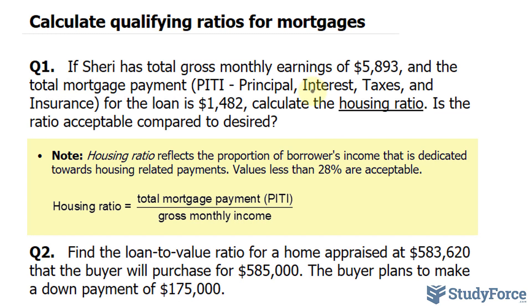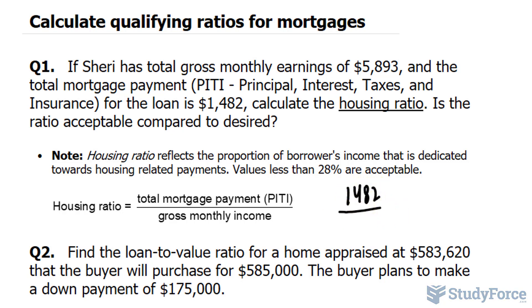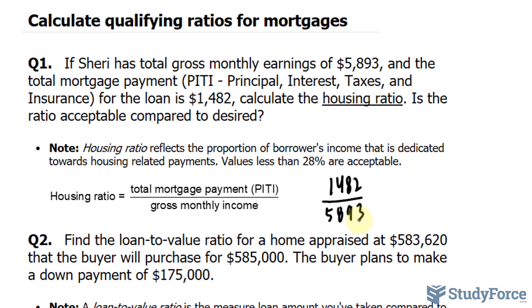The housing ratio reflects the proportion of the borrower's income that is dedicated towards housing related payments. Any value less than 28% is considered acceptable. The way you calculate this ratio is you take the mortgage payments that the person has to make and divide it by their monthly income. So in this particular example, Sherry has to pay $1,482 every month and we divide that by her gross monthly income, which is $5,893.